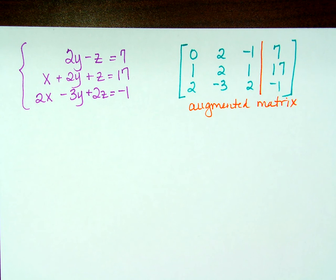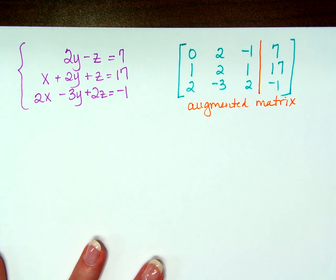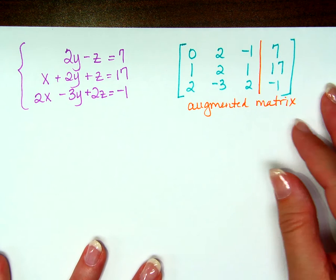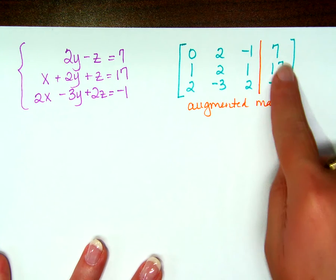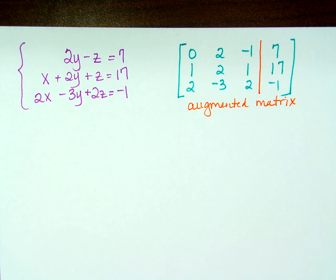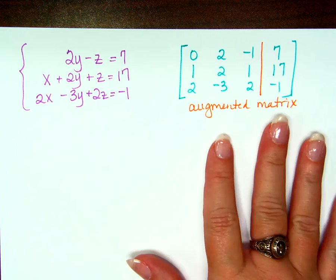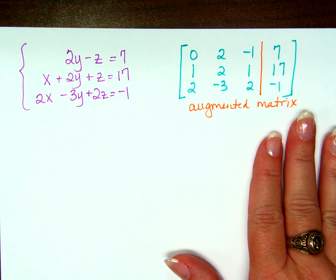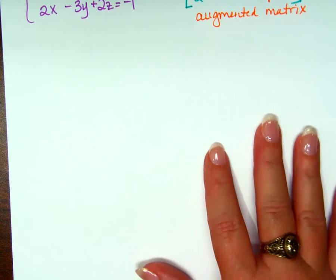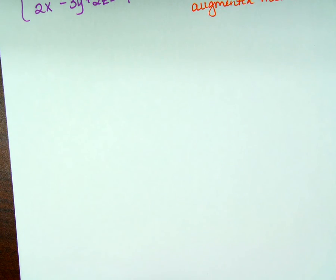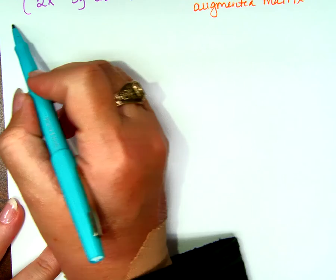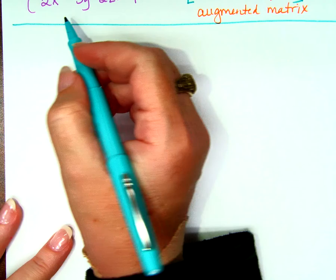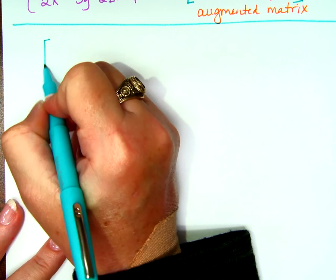The line, what does the line do? What does it separate? Yeah, separate the answers. These are all the variables, these are the answers. So if I give you a system, can you write the augmented matrix? Alright, here we go.